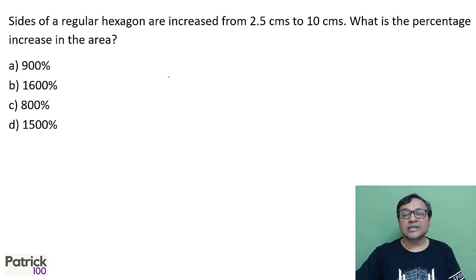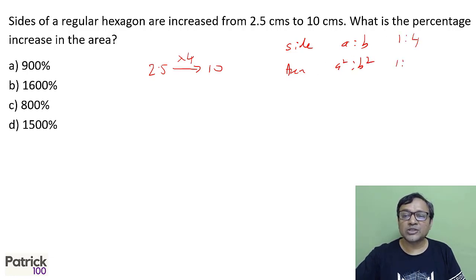Sides of regular hexagon increase from 2.5 to 10 cm. From 2.5 to 10, basically we are saying 4 times. There is a property which says that the sides are in the ratio of a is to b, area will be in the ratio of a squared is to b squared. So if side becomes 1 is to 4, area will become 1 is to 16. So area is 16 times.